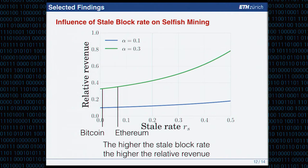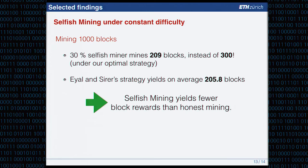Selfish mining allows an adversary to increase its relative revenue, which grows as the stale block rate of the blockchain increases, shown here for adversaries with 10% and 30% hash rate. Interestingly, selfish mining is not always rational: if we mine 1,000 blocks under a 30% selfish miner, they would mine 209 blocks instead of 300 blocks under our optimal strategy — clearly not rational. Under a constant difficulty blockchain, it doesn't make sense to do selfish mining.